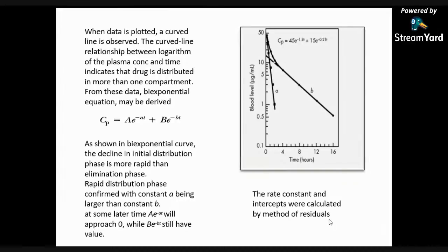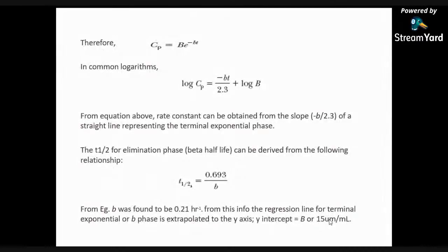Therefore, from this information, plasma concentration is equal to Be^(-βt), and after taking common logarithms: log Cp = (-βt / 2.303) + log B. From this equation, the rate constant β can be obtained from the slope, which is (-β / 2.303), of a straight line representing the terminal exponential phase. The elimination half-life, beta half-life, can be derived from: t½β = 0.693 / β.